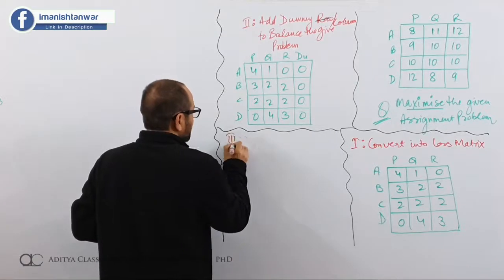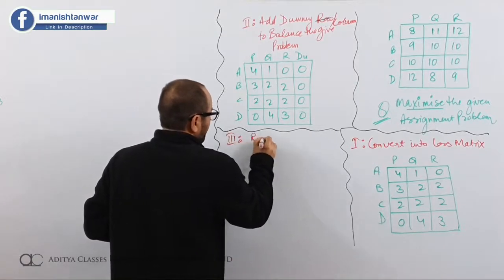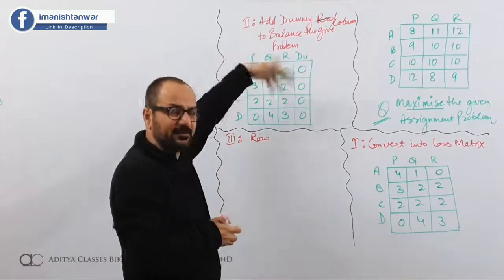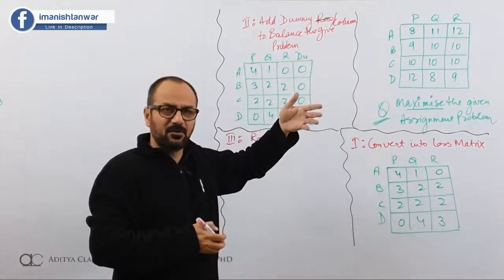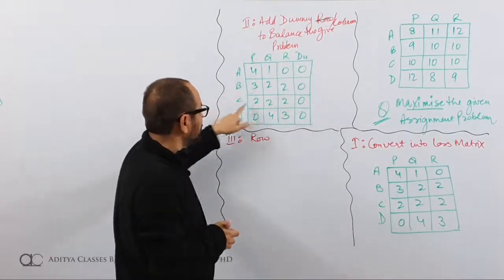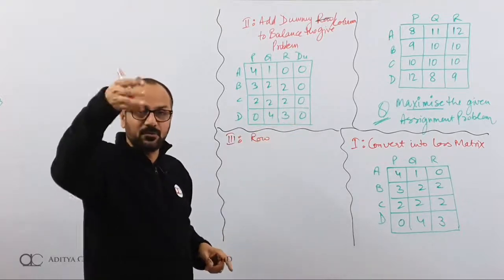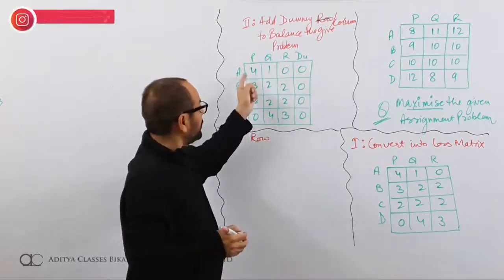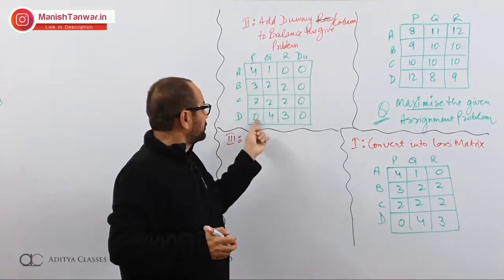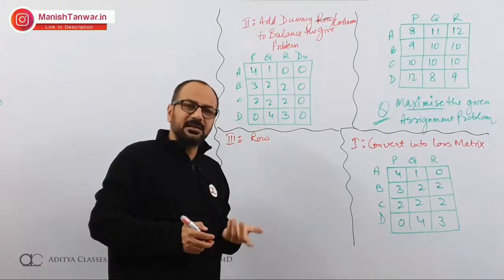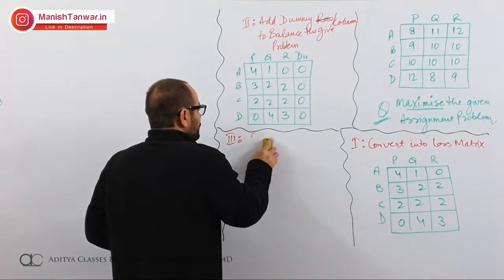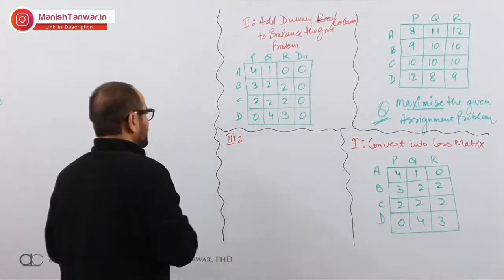The next steps are row reduction and column reduction. For row reduction — if you see, it is already row-reduced. Whenever you add a dummy column, it always gets row-reduced because the dummy values are zero. Every row already has a zero. If you try subtracting 0 from all values, everything remains the same. So whenever you add a dummy column, it is already row-reduced and you can go straight to column reduction.